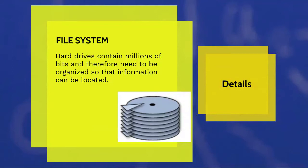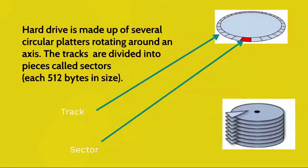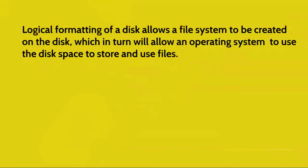Remember that the hard drive is made up of several circular platters rotating around an axis. The tracks are divided into pieces called sectors, each 512 bytes in size. Logical formatting of a disk allows a file system to be created on the disk, which in turn allows an operating system like DOS, Windows, Unix, etc. to use the disk space to store and use files.